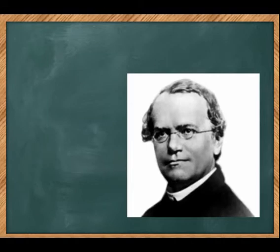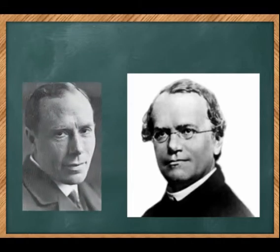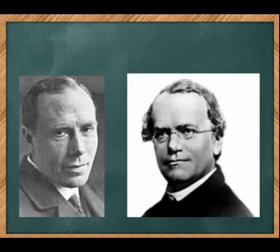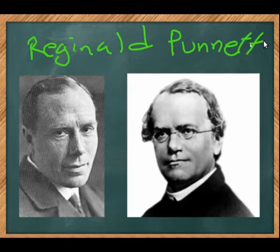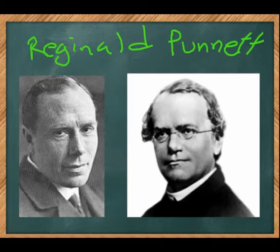One of the people who followed up on Gregor Mendel's work was Reginald Punnett. The Punnett Square is named after him. He was quite a productive geneticist in the early part of the 20th century, living from 1875 to 1967 in the UK, and he made a major contribution to genetics. The one we'll become most familiar with is the Punnett Square — a way of looking at Mendel's work and helping us solve genetics problems.